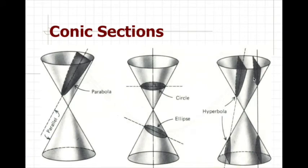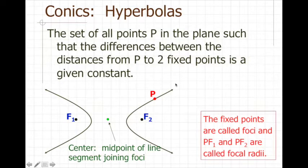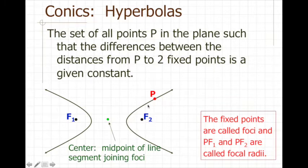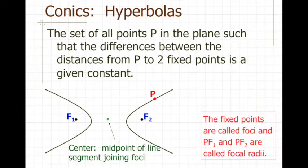Now it's time to talk about the hyperbola as a conic section, starting with the definition. The definition of a hyperbola is the set of all points P in a plane such that the differences between the distances from P to two fixed points is a given constant. Using the same vocabulary we used with ellipses, we call the distance from a point on the hyperbola to a focus the focal radii, of which there are two: PF1 and PF2. The distance between these two focal radii have a difference that's constant: PF1 minus PF2 always equals a constant. The center, like the center for an ellipse, is the midpoint of the line segment joining the two foci.